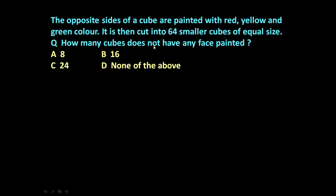It is then cut into 64 smaller cubes of equal size. Question is how many cubes don't have any face painted. The given cube is painted with red, yellow and green color on the opposite sides, and it is then cut into 64 smaller pieces.